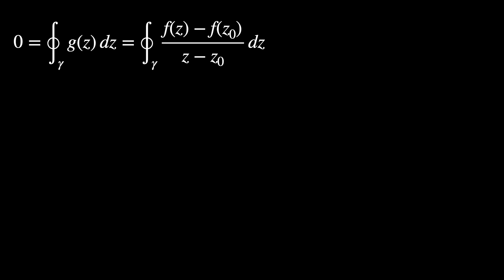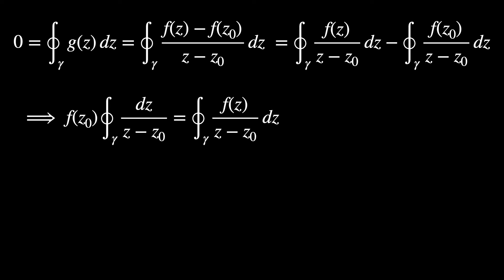So now we can write the following. This integral is zero. Then we can open the two terms here into two different integrals that subtract each other, which is the same thing as writing one term equals the other. And since the winding number is one in this case,